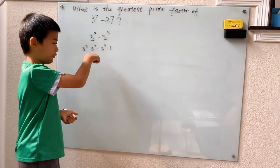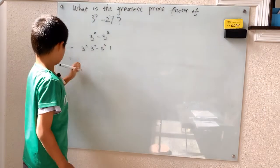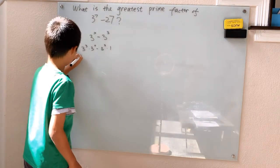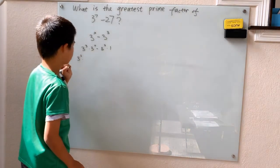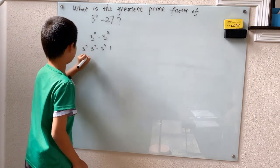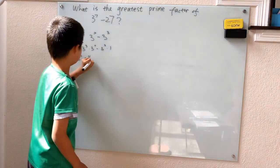A little too small. 3 cubed times, let's see, 3 to the 4th minus 1. Oh yeah, I forgot the parentheses.